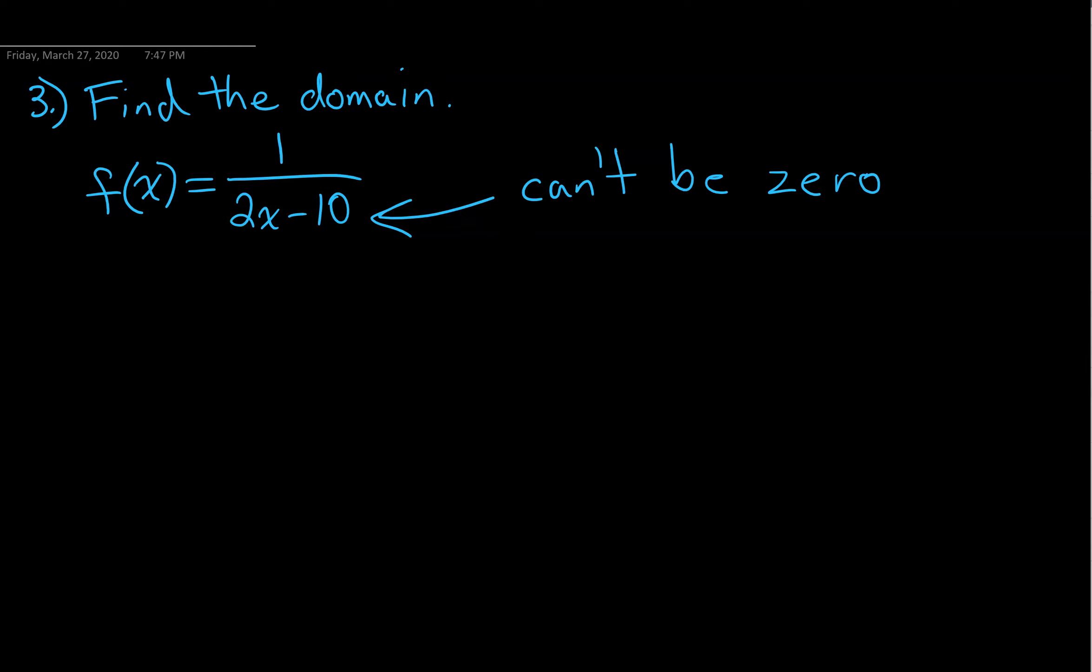You might be able to look at this and see what number makes it zero. If not, let's just take our denominator and set it equal to zero. We can figure out what will make that true.